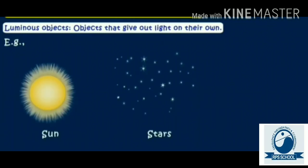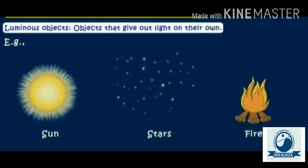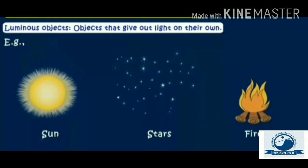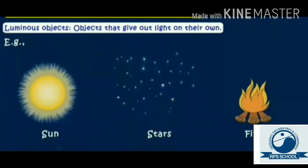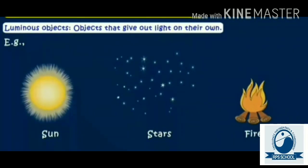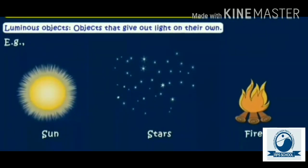Now, let us see what are luminous and non-luminous objects. Children, objects that give out light on their own are known as luminous objects. Let us see some examples like sun, stars, fire. They glow and give out light on their own. So, they are luminous objects.